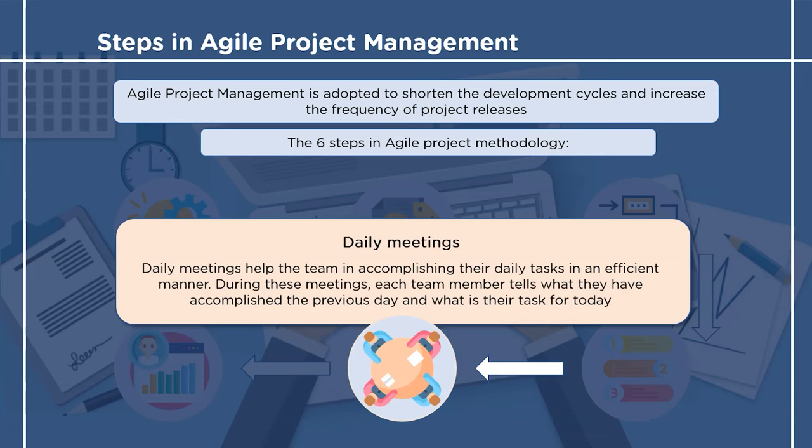The next step emphasizes daily meetings. There are short meetings every day to discuss if the team was able to finish the task for each sprint and check if there are any amendments required. Each team member talks about what they achieved in the last sprint and what they are going to work on in the next sprint.